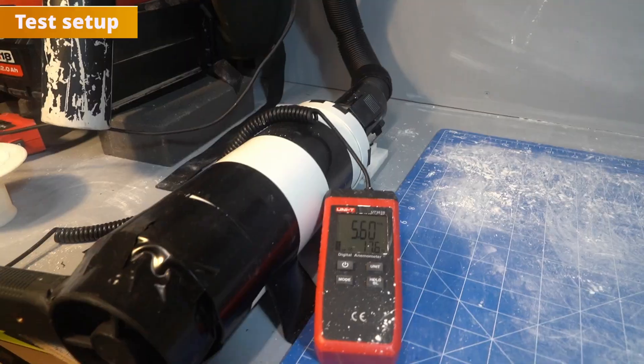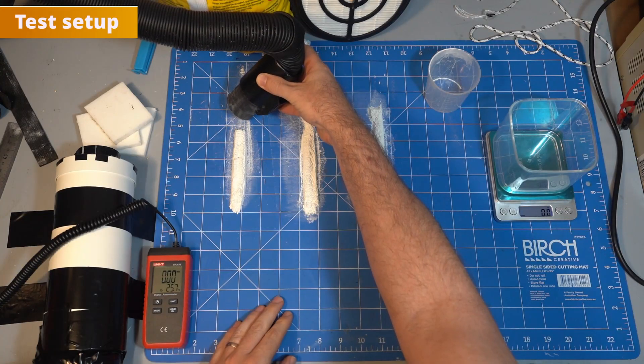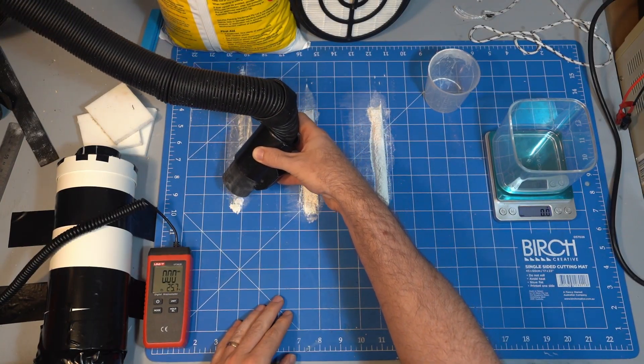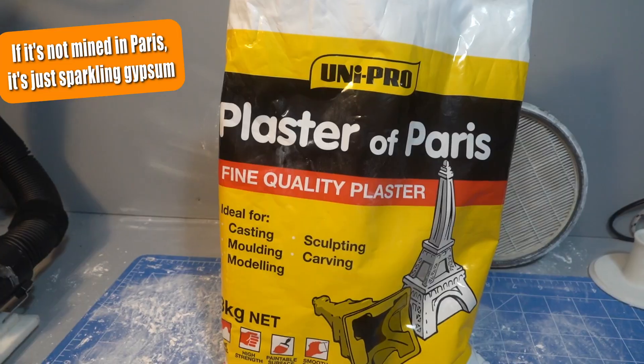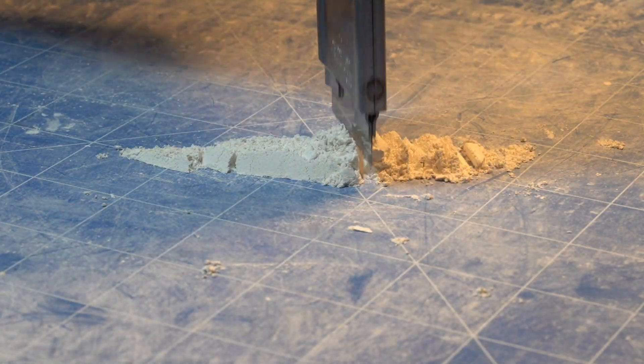To demonstrate how quickly this vacuum loses flow I set up a flow rate meter. I then get the vacuum to snort 10g lines of plaster of Paris before measuring the flow again. Plaster of Paris is just gypsum which is what gyprock, drywall and plasterboard are made of and is a common construction dust.